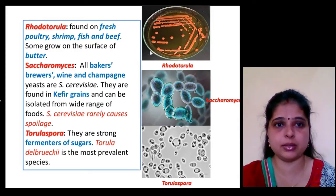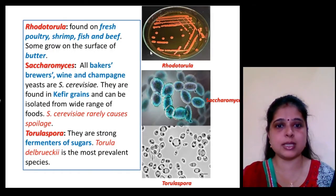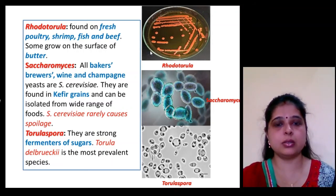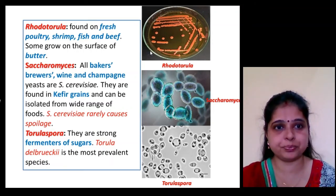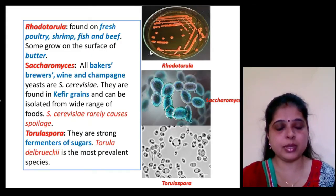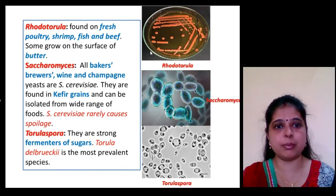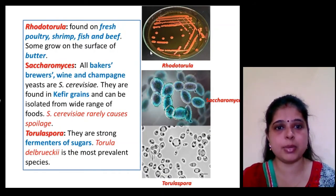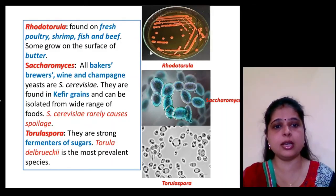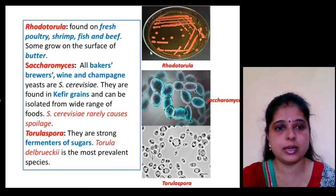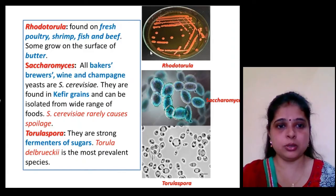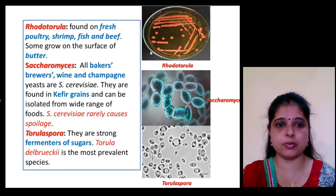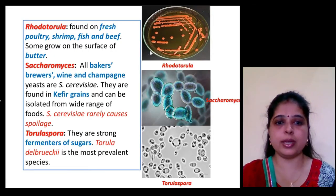Rhodotorula is found on fresh poultry, shrimp, fish, and beef, and some species also grow on the surface of butter. Saccharomyces is a useful yeast used by bakers and brewers in the making of wine and champagne. The species cerevisiae is found in kefir grains and can be isolated from a wide range of foods; it rarely causes food spoilage. Torulaspora shows strong fermentation of sugar, with the most prevalent species being T. delbrueckii.